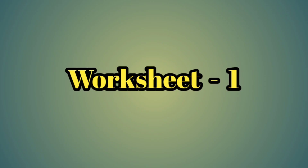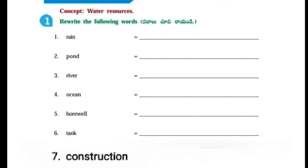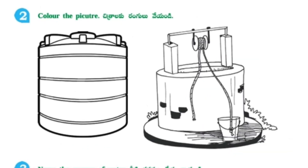Worksheet No. 1. A glossary is given. Next concept: Water Resources, Construction of Water Tank. Rewrite the following words: Rain, Pond, River, Ocean, Borewell, Tank, and Construction.